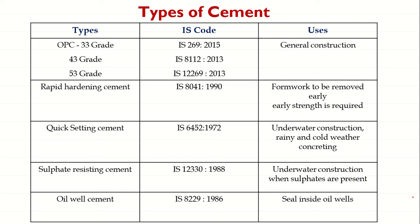The second type is Rapid Hardening Cement. The IS code for this type is IS 8041:1990 (revised version). Rapid hardening cement attains high strength in the early days. It is used in concrete where formworks are to be removed at an early stage, and it is similar to Ordinary Portland Cement but has increased lime content and higher amount of C3S with finer grinding.